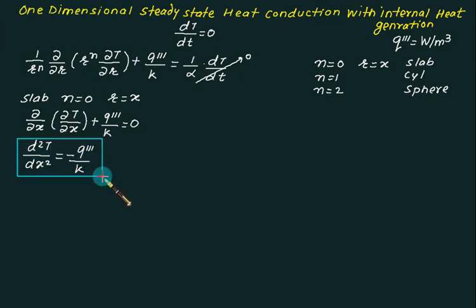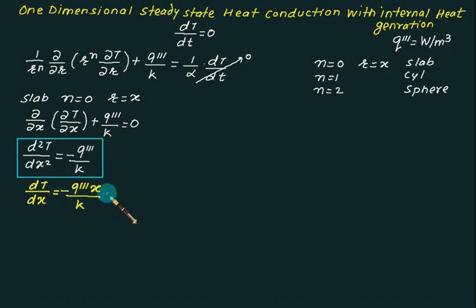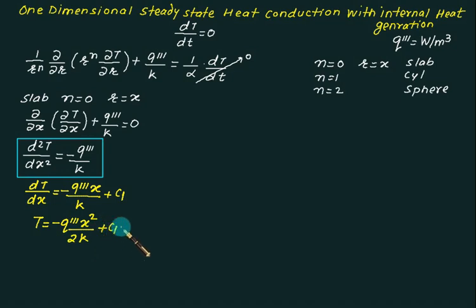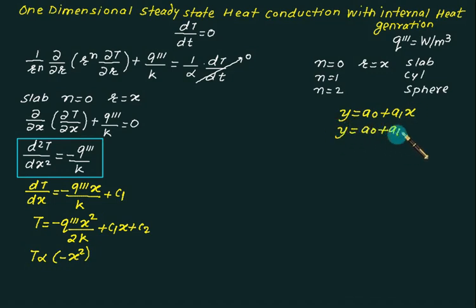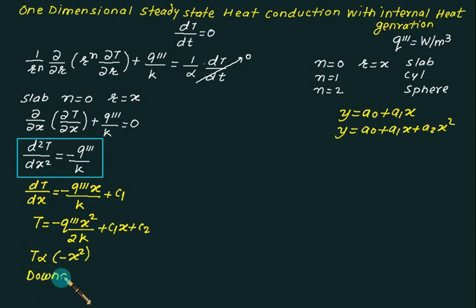Integrating d²T/dx² = -q‴/k once gives dT/dx = -q‴x/k + C1. Integrating again gives T = -q‴x²/(2k) + C1·x + C2. Since temperature is proportional to -x², whenever there is internal heat generation we have a downward parabolic distribution. Recall: y = a0 + a1·x is linear; adding an a2·x² term makes it parabolic.